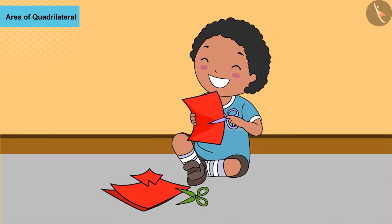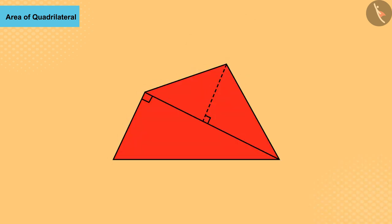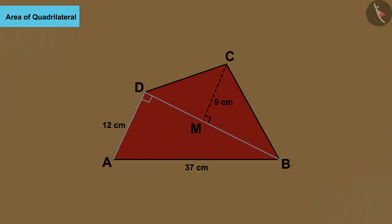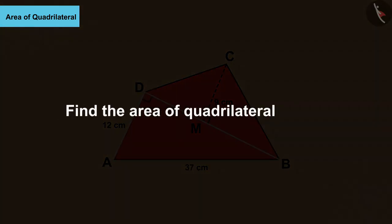Shantanu wants to make a quadrilateral birthday card for his friend with measurements like this. If AD makes a right angle on BD, can you find the area of this quadrilateral?